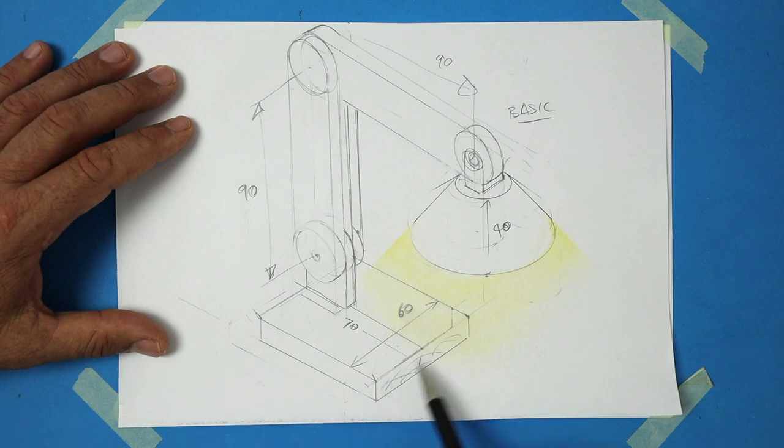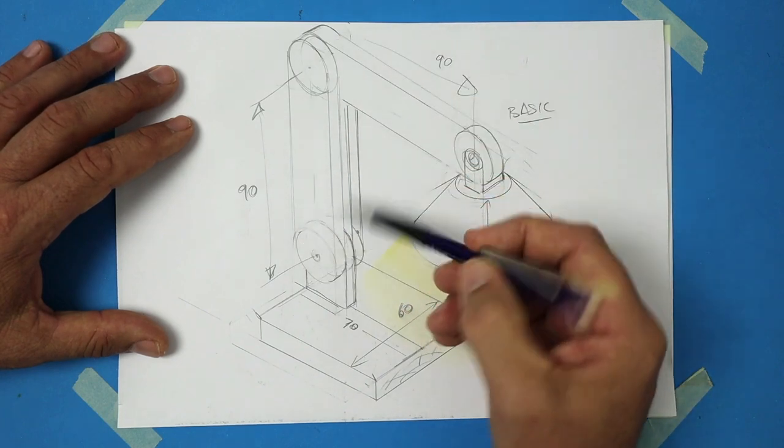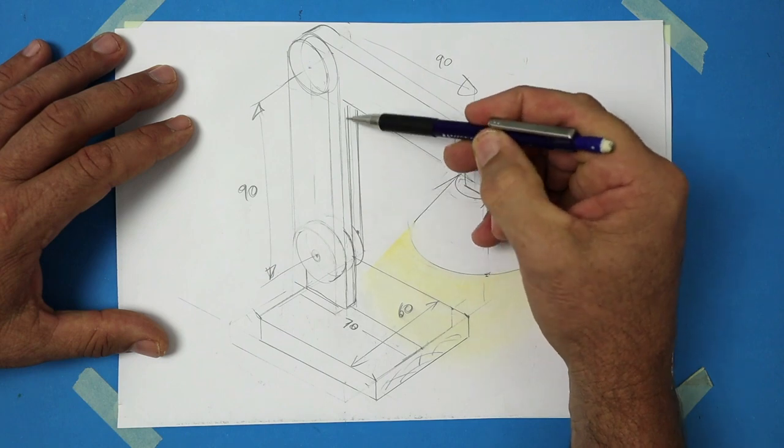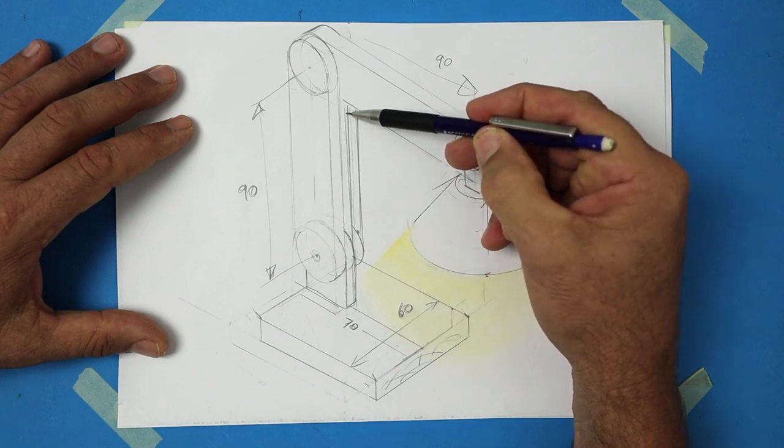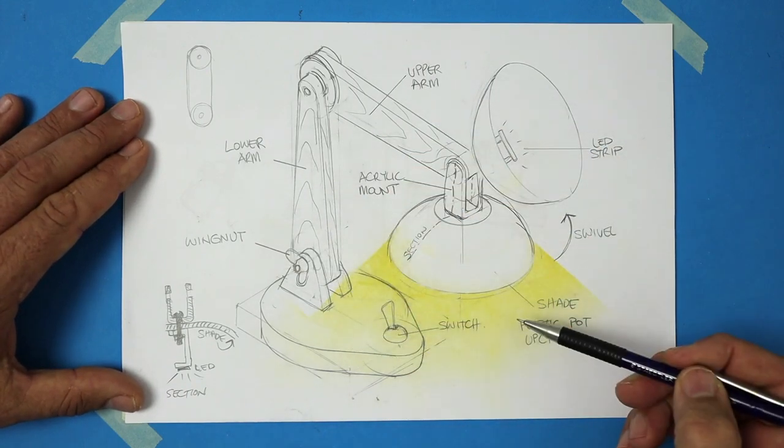We'll start off by drawing the base, then the lower arm, the upper arm, and you could easily change this design by adding a second lower arm or taking away material to improve the design. This is much the same design, but with a few small changes.